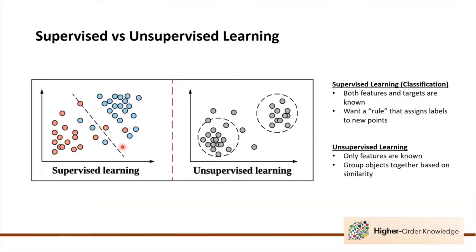Let's start with the difference between supervised and unsupervised learning. On the left we have an example of supervised learning for classification where both features and targets are known, and the main goal is to find a rule or model that assigns labels to your points. In the figure we can observe two groups and the labels assigned are based on a decision boundary.